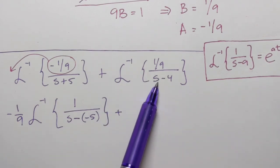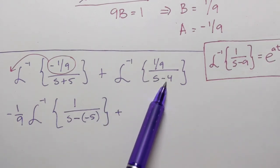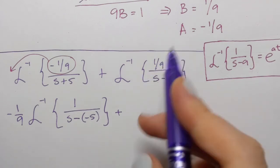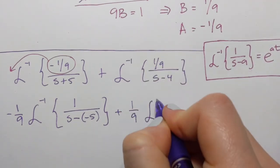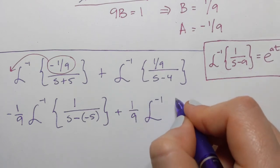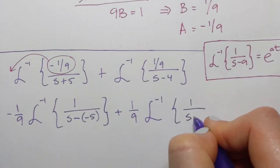And for the second one, I already have the difference in the denominator, s minus 4. So I only need to put 1 over 9 in the front of the inverse transform. So it's 1 over s minus 4.